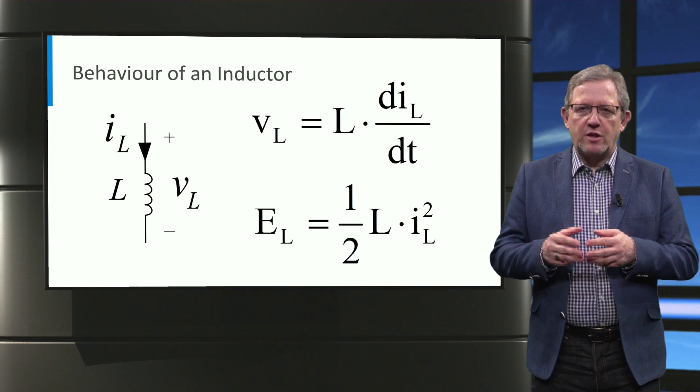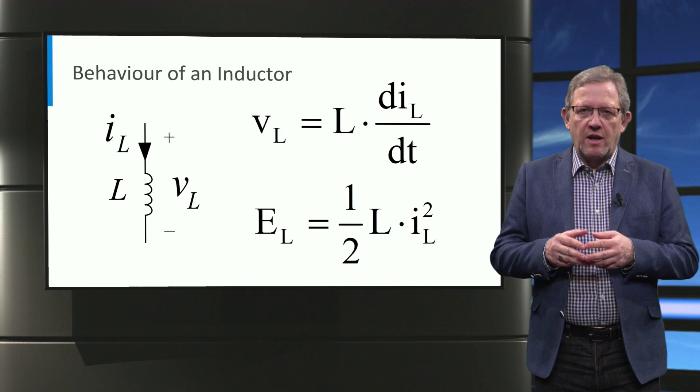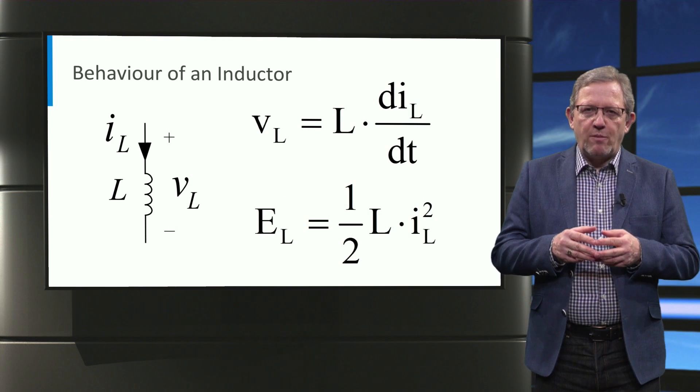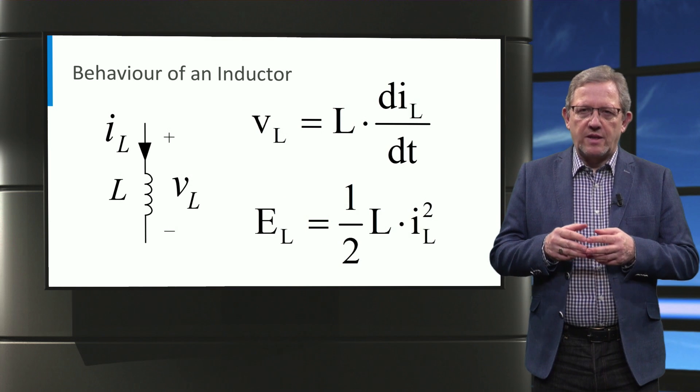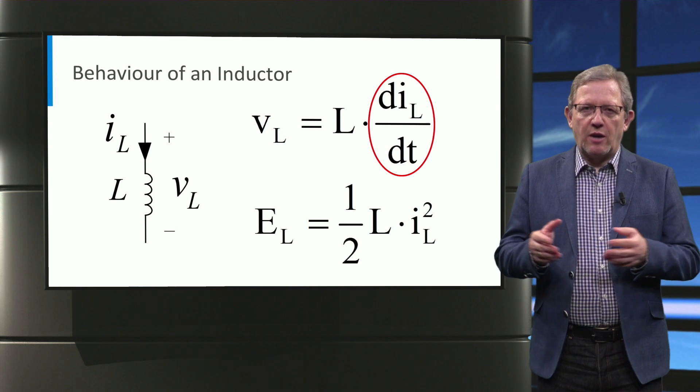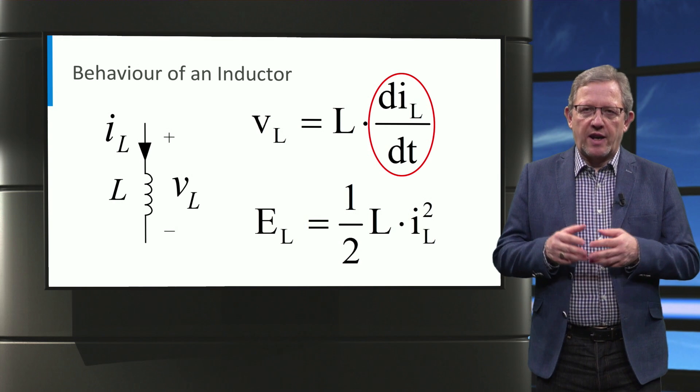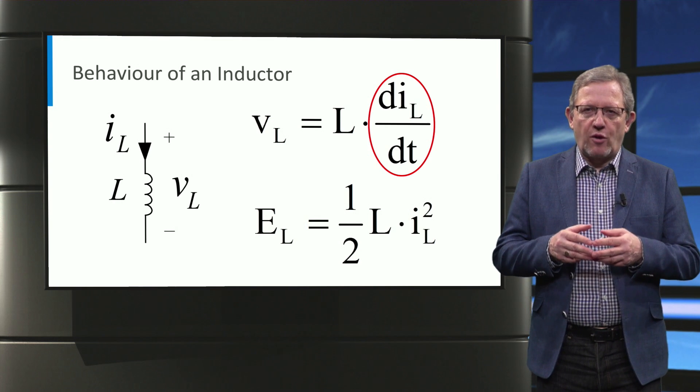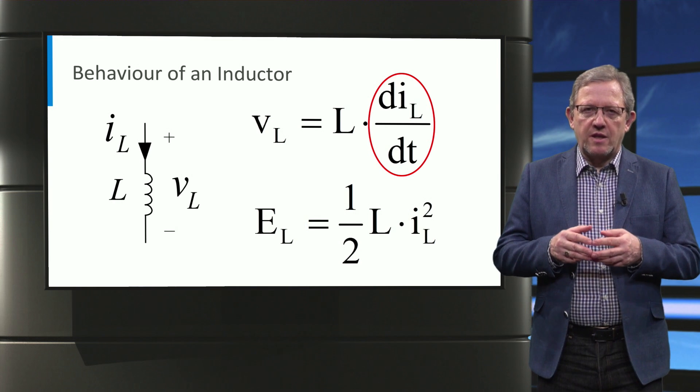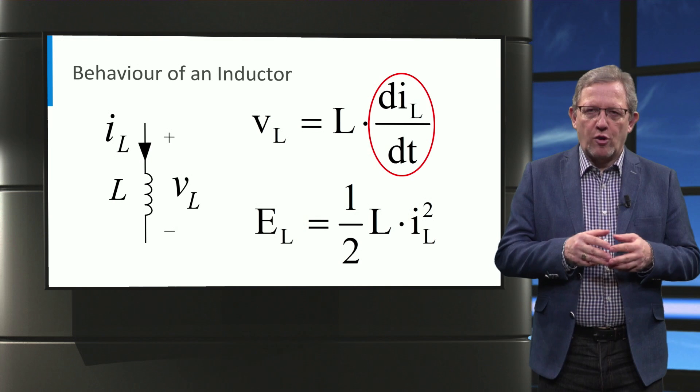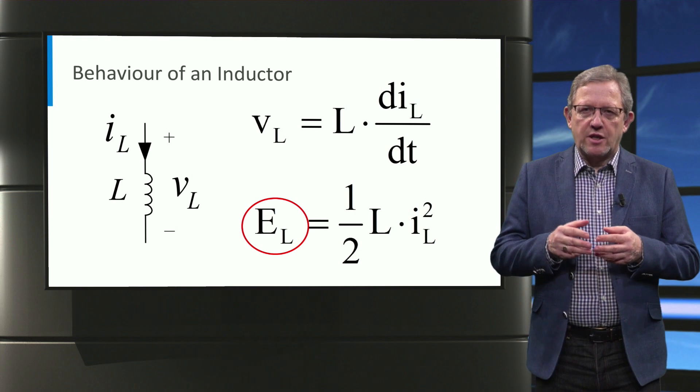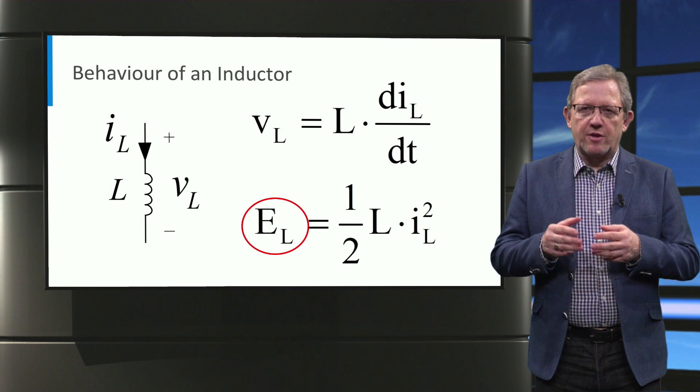While the capacitor is used in parallel to the load to maintain the level of the DC voltage, an inductor can be employed in series to maintain the level of DC current. The inductor is smoothing out the rate of change of current that is reflected as the voltage across the inductor. Similarly, the inductor is able to release or absorb its stored energy, which depends on the inductance and the square of the current passing through the inductor.